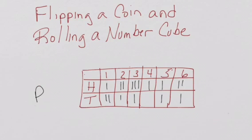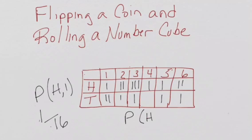So the probability of getting a heads and a 1 would be 1 out of 1, 2, 3, 4, 5, 6, 7, 8, 9, 10, 11, 12, 13, 14, 15, 16. 1 out of 16 if I counted that right. The probability of a heads and a 3,